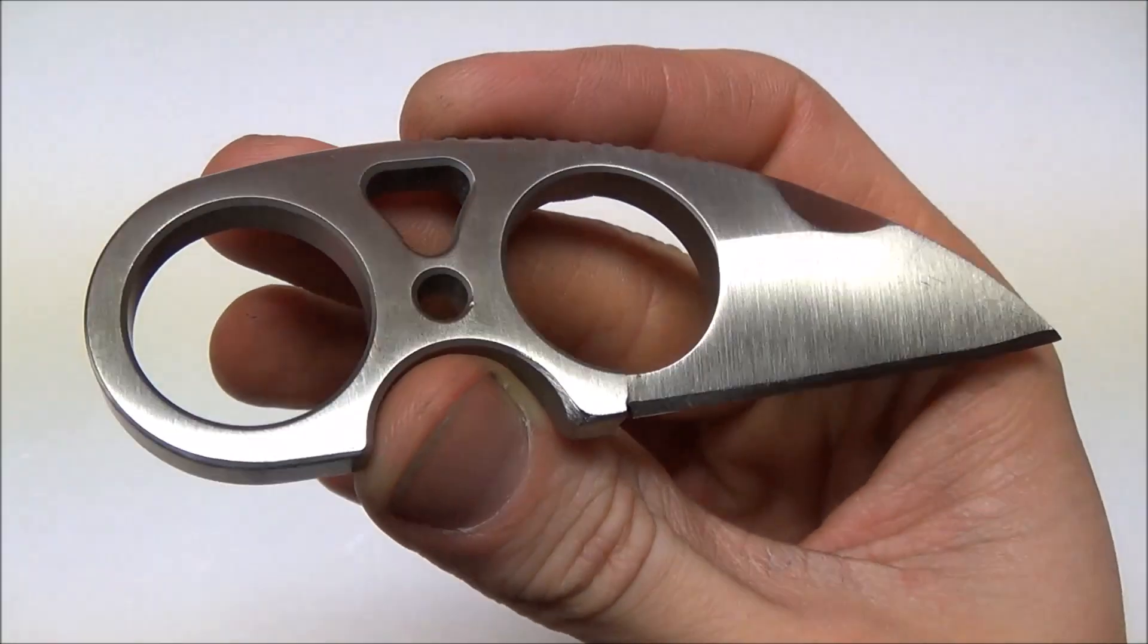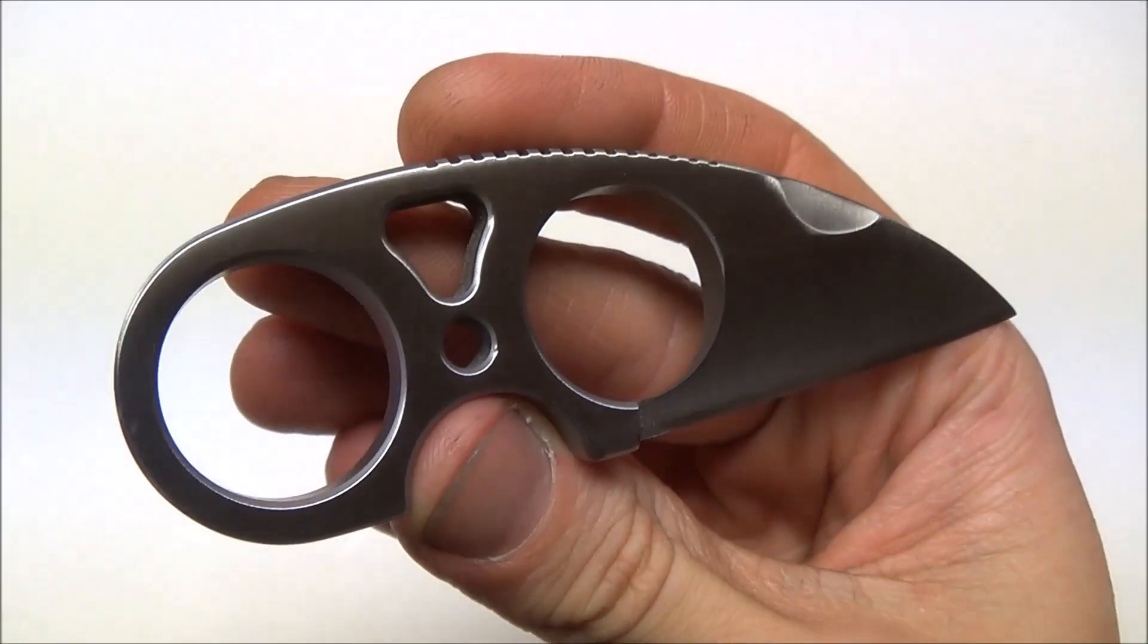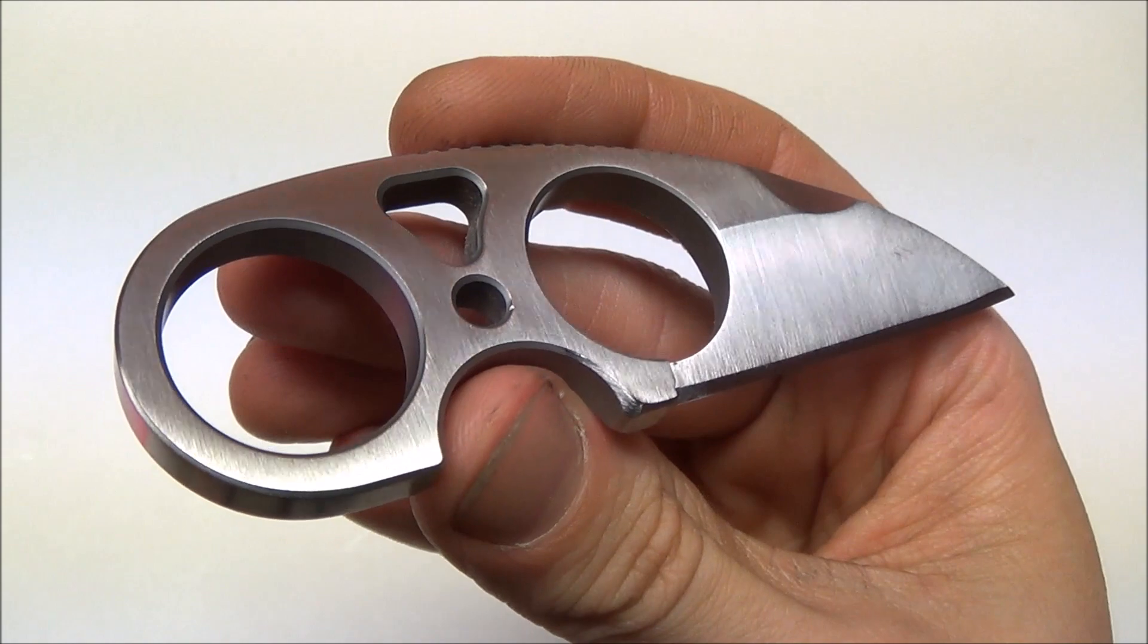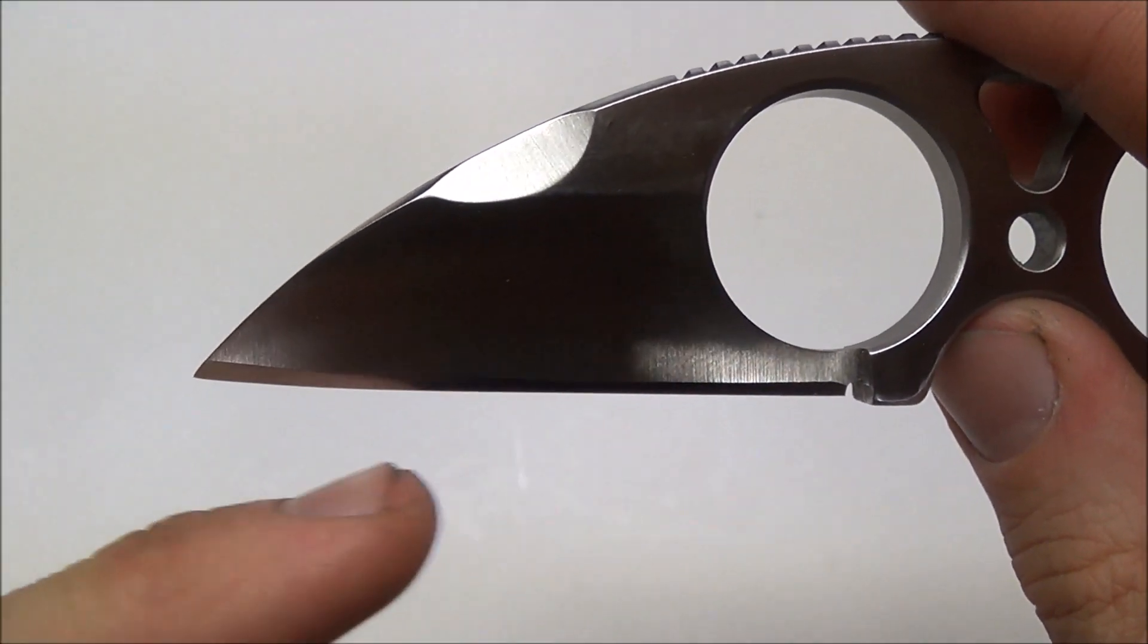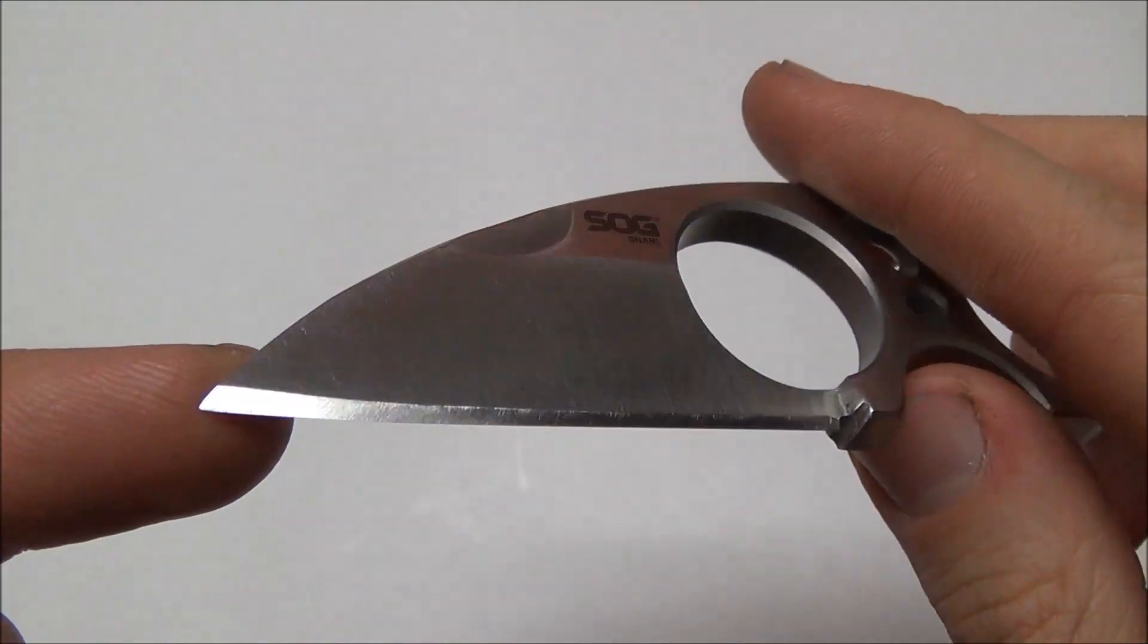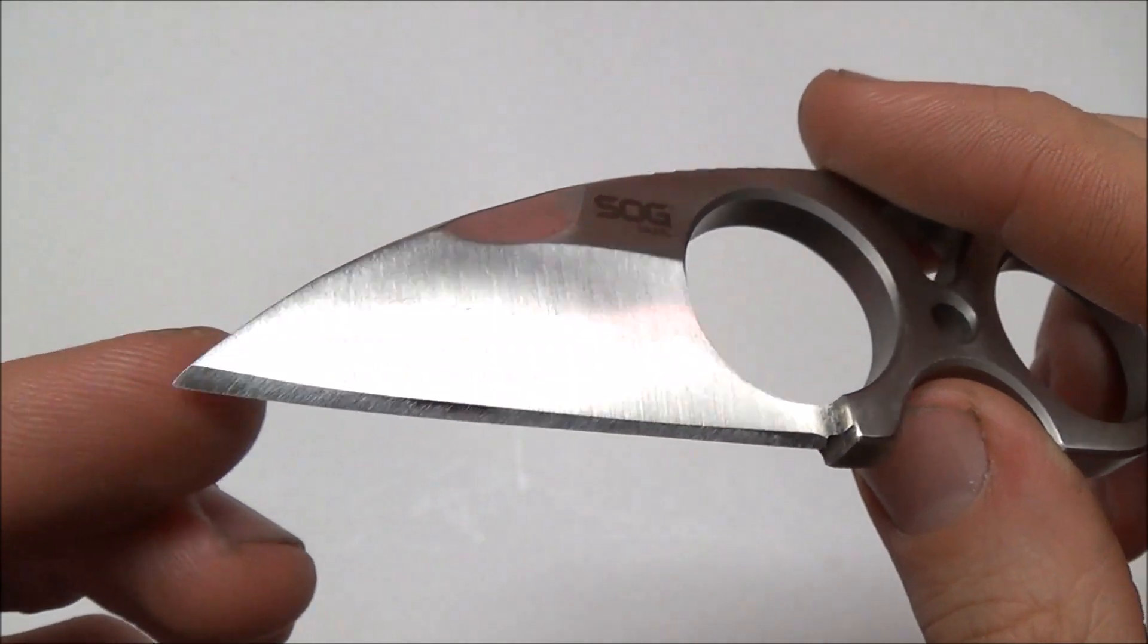Of course, Jason, his customs, he offers stonewash, sandblast, beadblast, coated versions. A wharncliffe style blade. So it's just the straight edge, which is what I prefer for a utility knife. Very effective, very sharp tip on this thing.